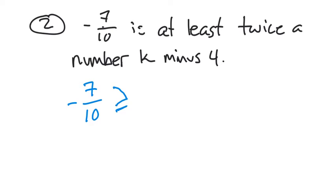That means that it's not going to be any less than. At its very least, it's going to be whatever we put over here. And that is going to be twice a number K. So twice means two times a number K. So we'll put 2K minus 4. All right, we're done.